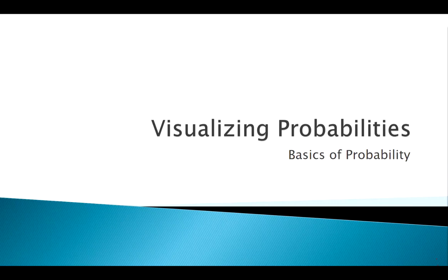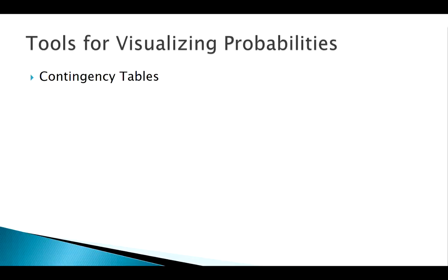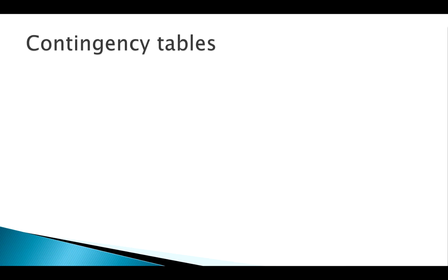Welcome back. Today we're going to be talking about some tools that we can use to visualize probabilities. The main tools are going to be contingency tables, tree diagrams, and Venn diagrams. You may have seen some of this before — probably tree diagrams and Venn diagrams — but let's start with contingency tables.